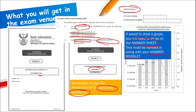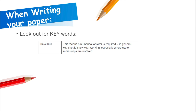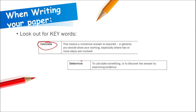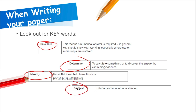When approaching the paper, look for keywords. Keywords include: calculate, determine, identify, and suggest. For example, if you see the word 'calculate', you know you need a numerical answer and must show your working. This is also covered in the Mind the Gap book. Look out for these keywords to understand exactly what each question is asking.